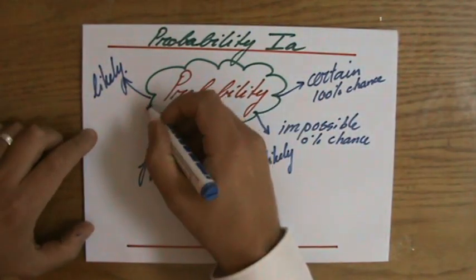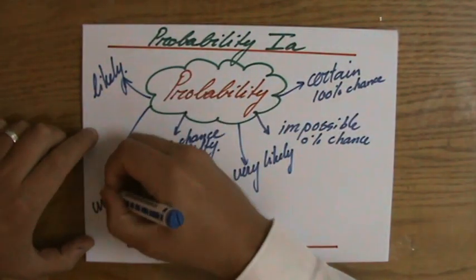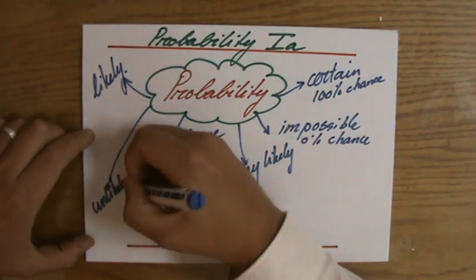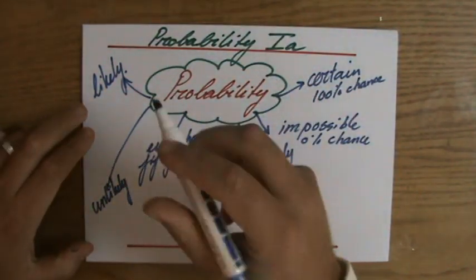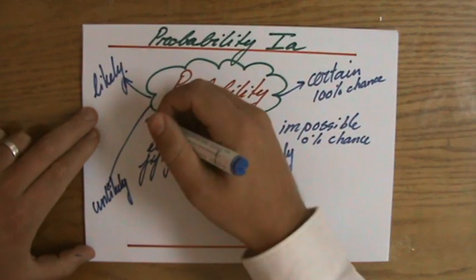Very likely. And then you have unlikely. Unlikely. For instance, it is unlikely that you are going to fail your next math test. Why? Because you are a very smart young boy or girl.